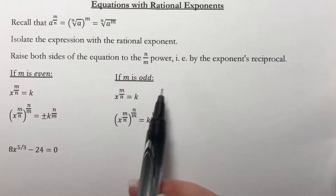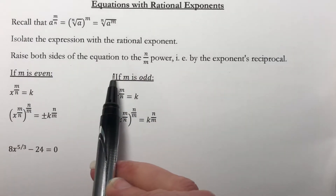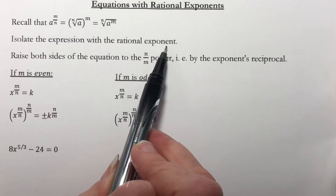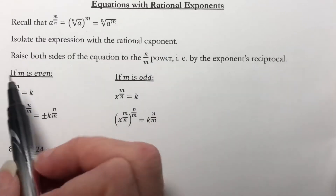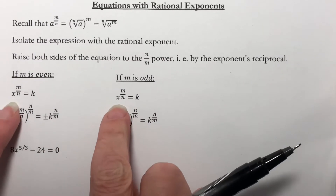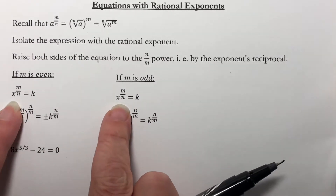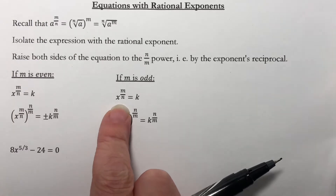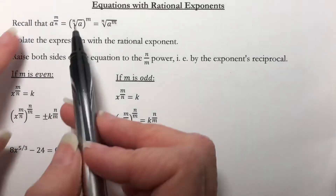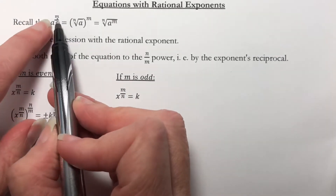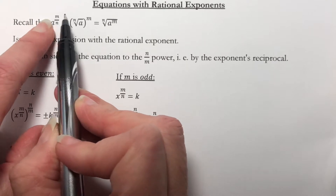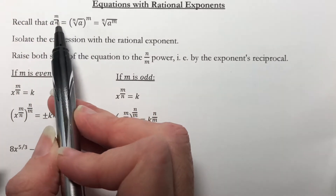The way we work these is we're going to isolate the expression with a rational exponent — get the part with our fractional exponent completely by itself. But then we have to be careful, because whether the numerator is even or odd determines how we work the problem.